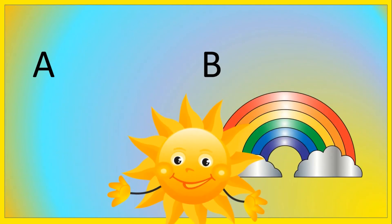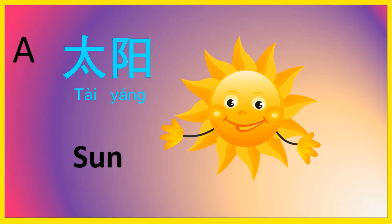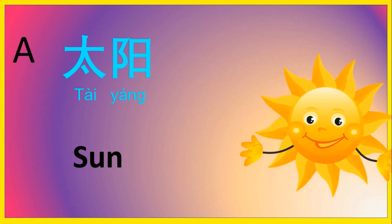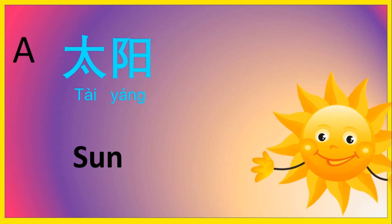哪一个是太阳? 太阳, 太阳, 太阳. It's A — 太阳, sun. 太阳, 太阳.